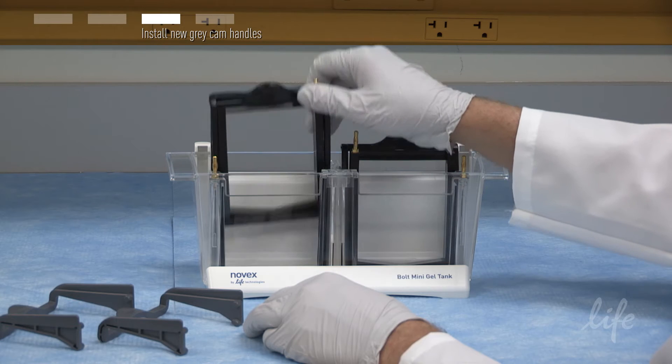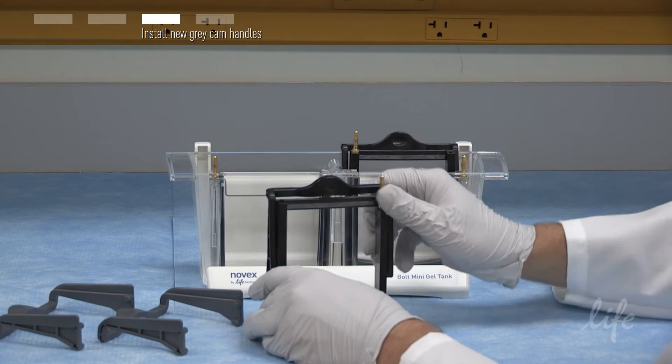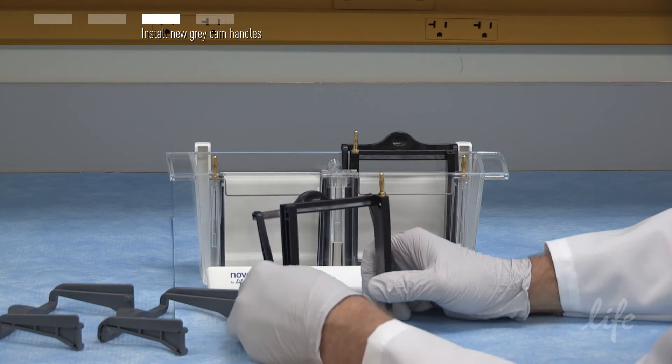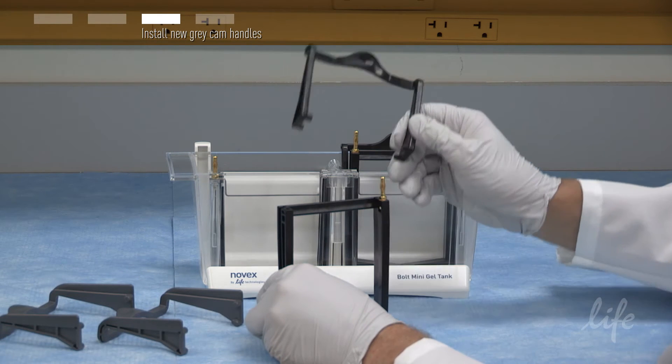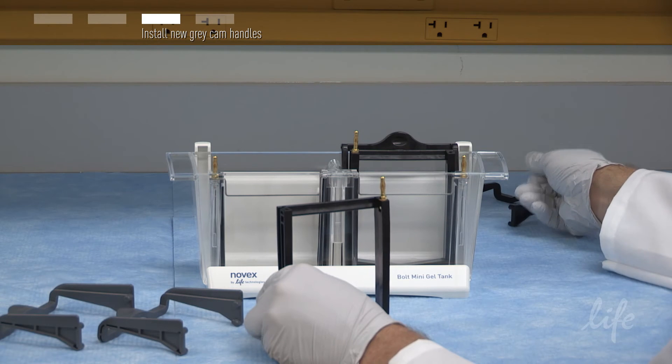Take one cassette clamp out of the tank and while it is still facing towards you, pull out one side of an existing black cam handle and then the other side in order to remove the handle from the cam plate.